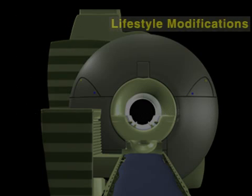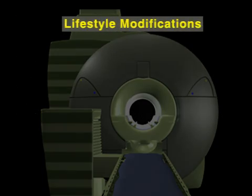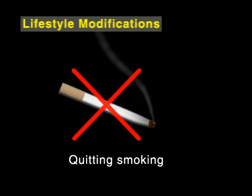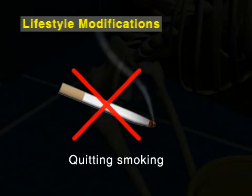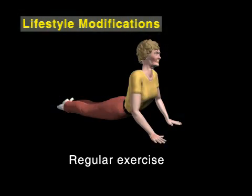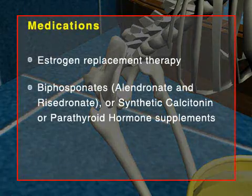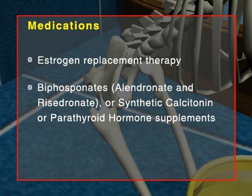Osteoporosis can be treated by changes in lifestyle, like quitting smoking, regular exercise, and a balanced diet, and by taking medications such as estrogen replacement therapy, bisphosphonates, alendronate, and risedronate, or synthetic calcitonin or parathyroid hormone supplements.